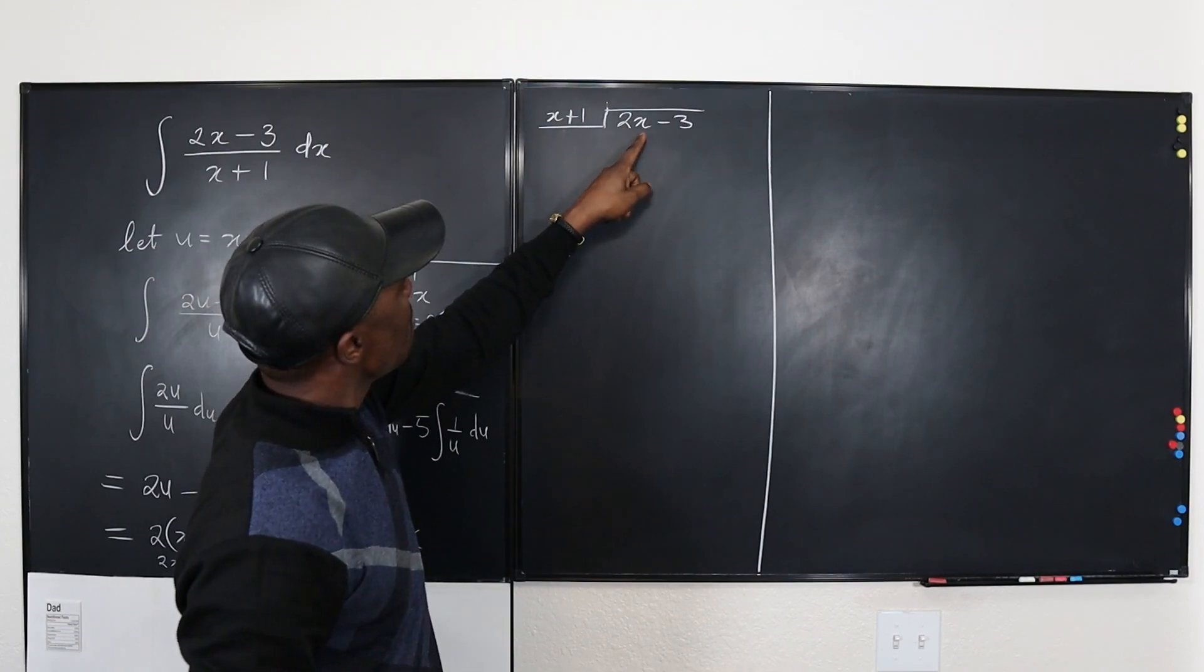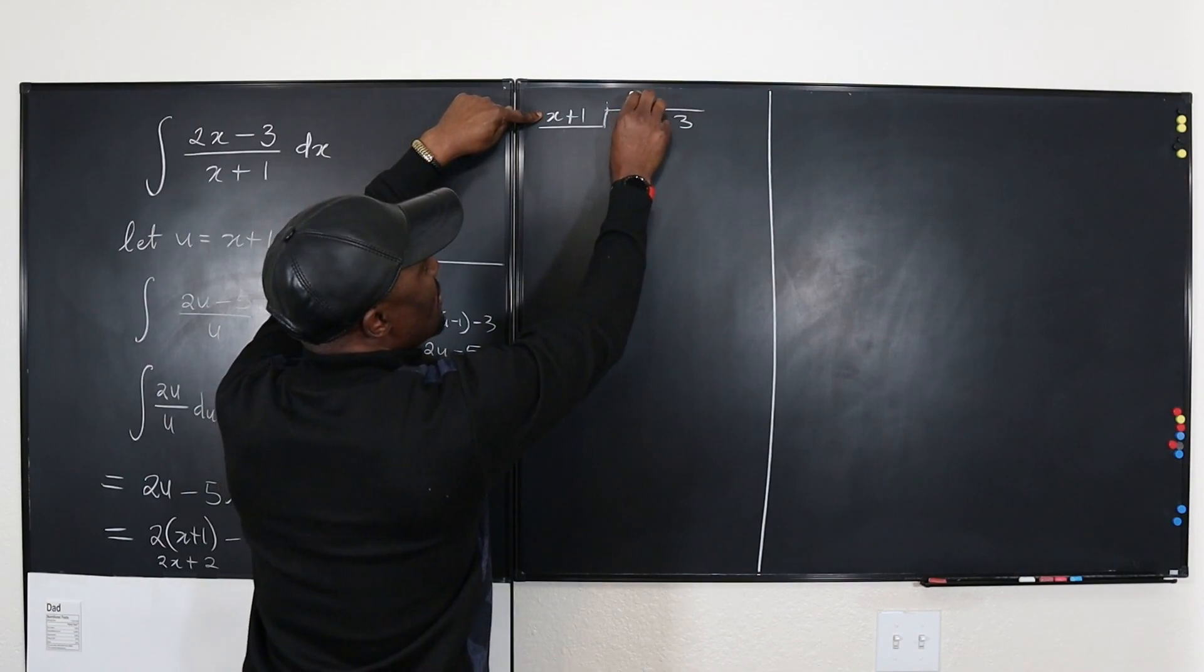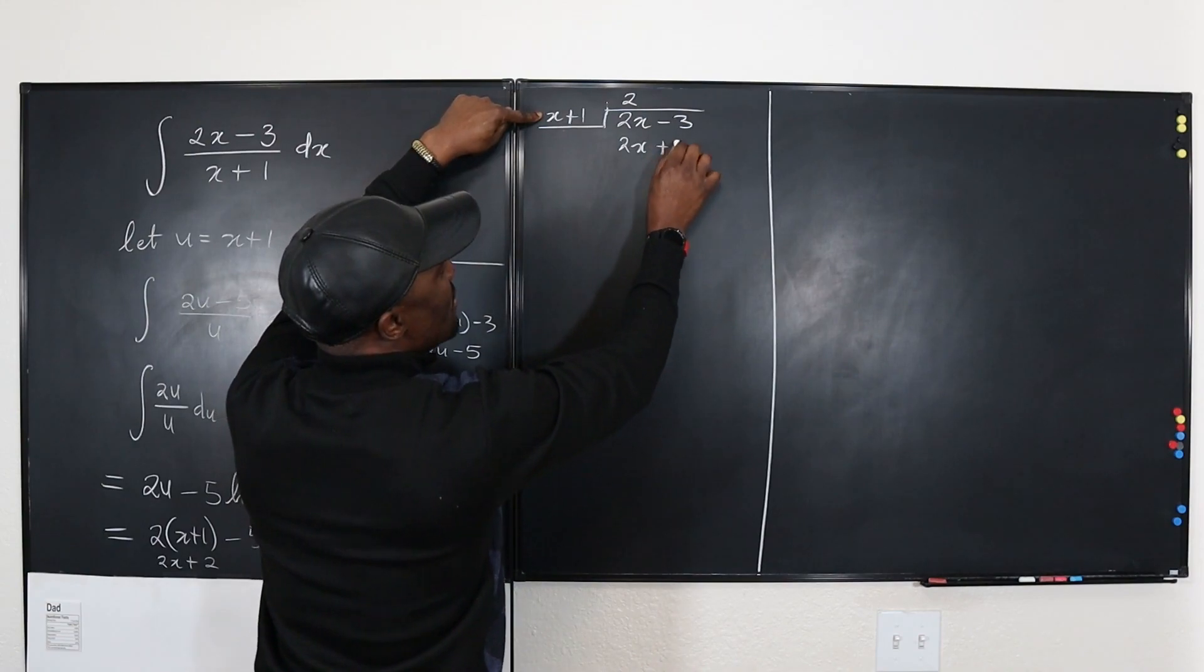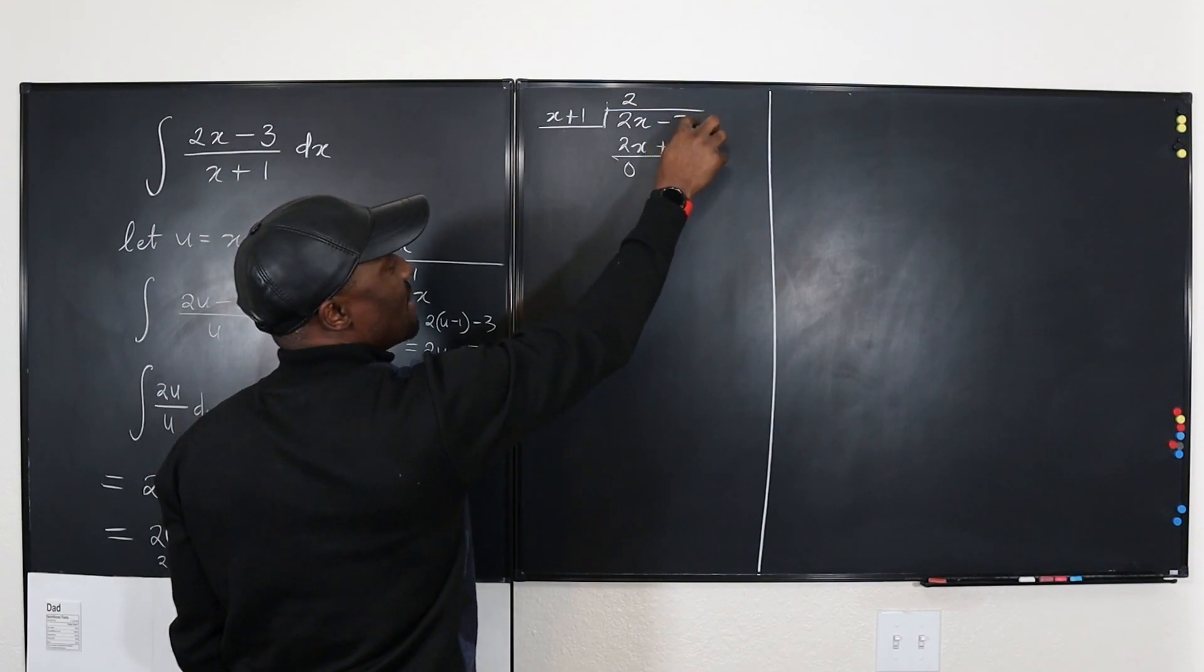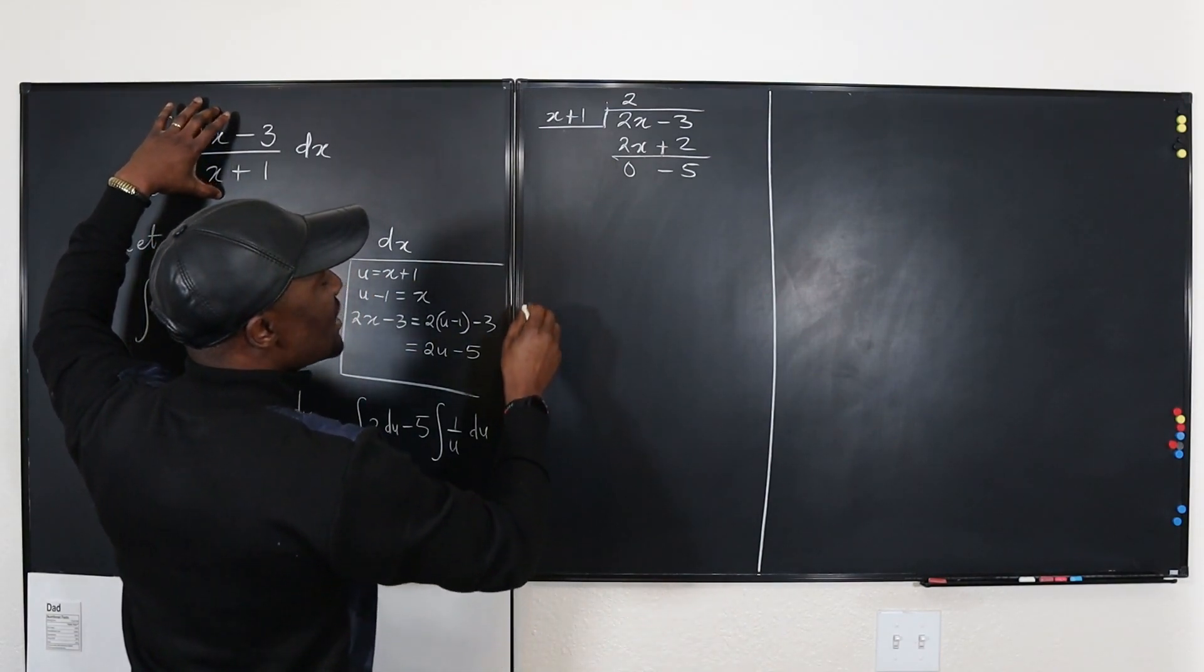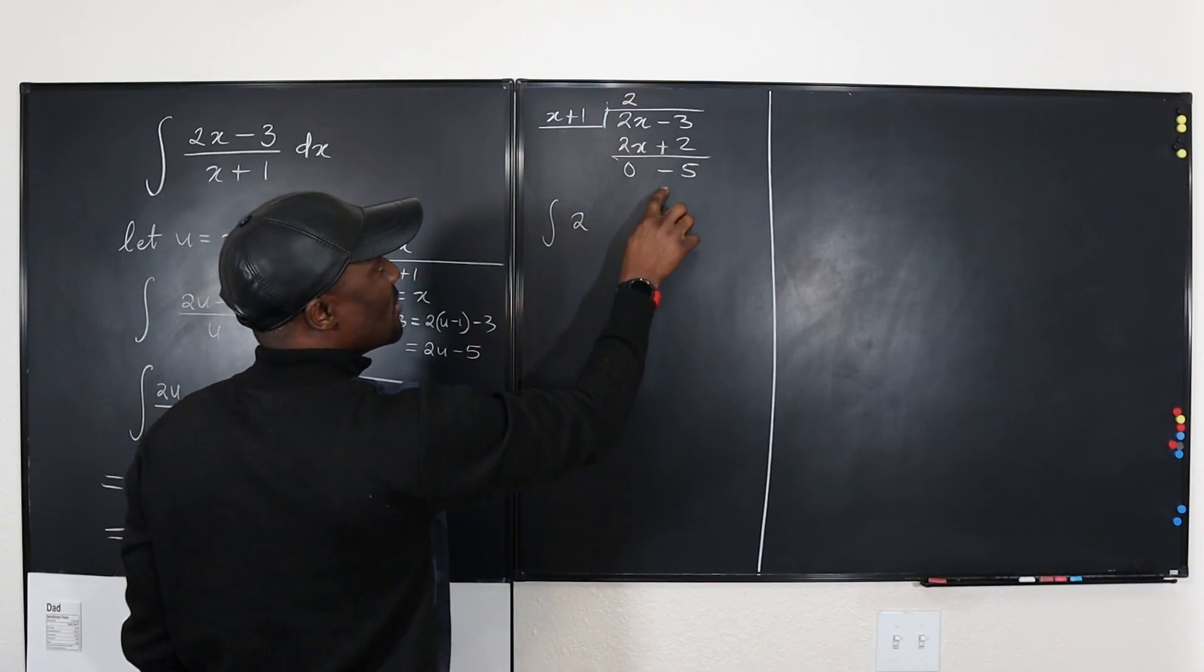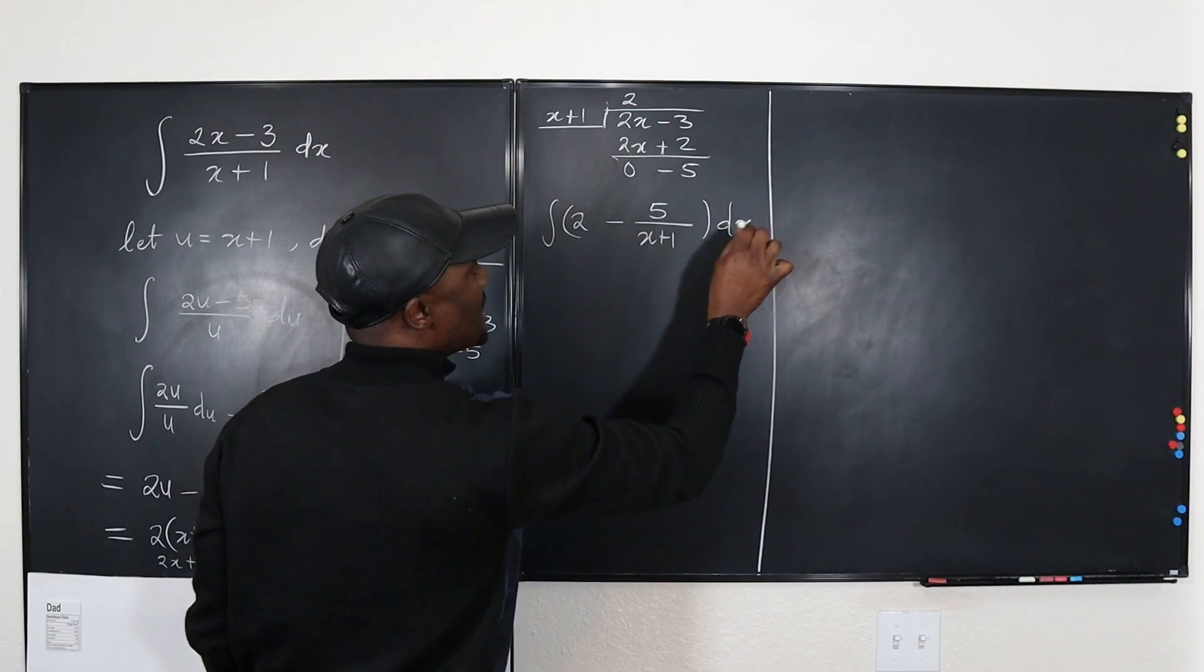So I'm going to divide the top, we're going to divide 2X minus 3 by X plus 1. So this expression would be, what would you multiply this by to get 2X? I have to do 2. So 2 times X gives me 2X and 2 times 1 gives me 2. So now I subtract. 2X minus 2X is 0 and negative 3 minus 2 is negative 5. It looks like I'm done.